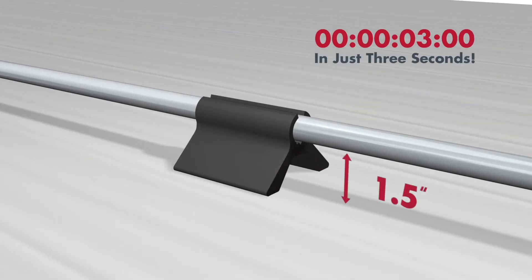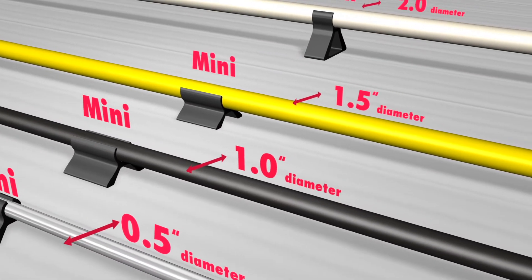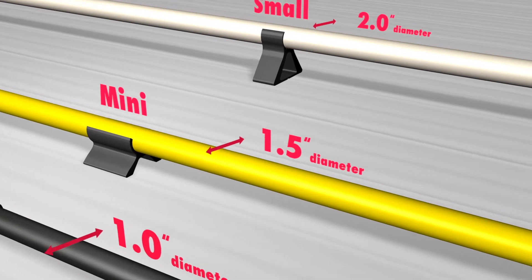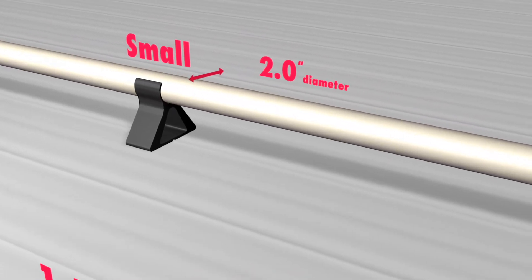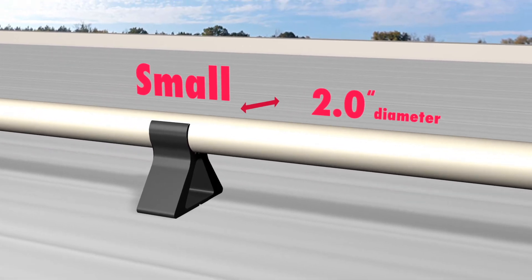Secures conduit one and a half inches off the surface of the roof. Accommodates one half inch to one and a half inch pipe diameters. Larger PipeGuard small units are also available for pipes up to two inches in diameter.